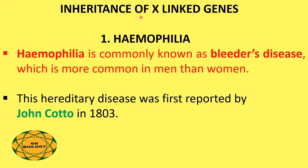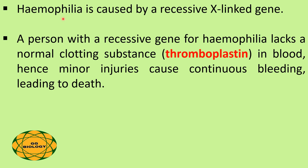Now we will look at the inheritance of X-linked genes. First, we are going to see hemophilia. Hemophilia is commonly known as bleeder's disease, which is more common in men than women. This hereditary disease was first reported by John Otto in the year 1803. Hemophilia is caused by a recessive gene present in the X chromosome.